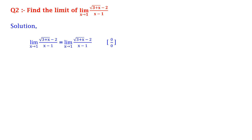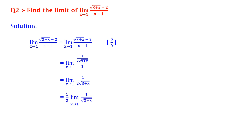So we again apply L'Hôpital's rule, which gives us limit x tends to 1 of the differentiation of the numerator, that is 1/(2√(3+x)), divided by 1. This equals limit x tends to 1 of 1/(2√(3+x)), which equals 1/2 times 1/2, which is equal to 1/4.